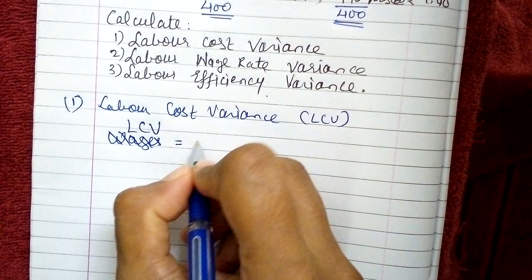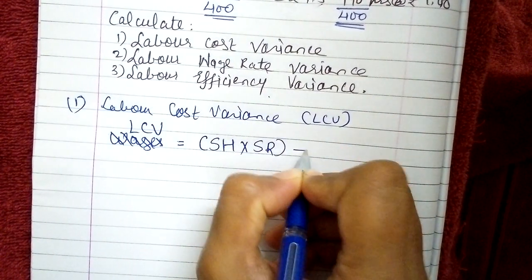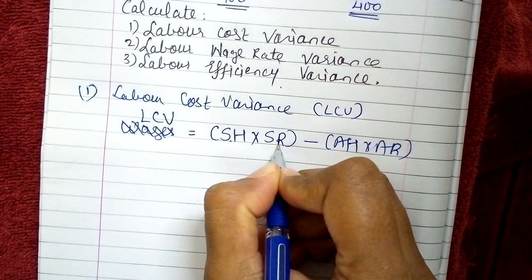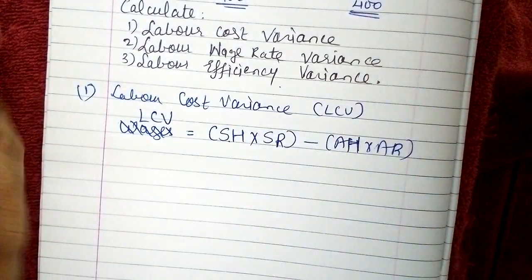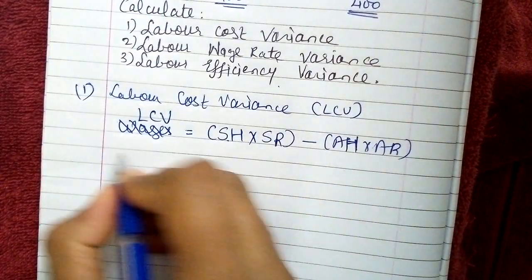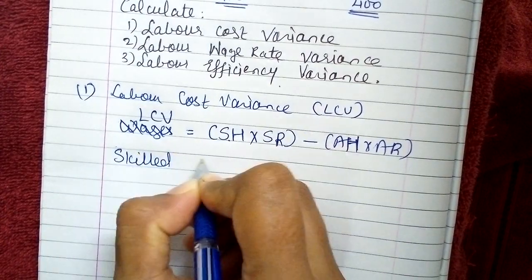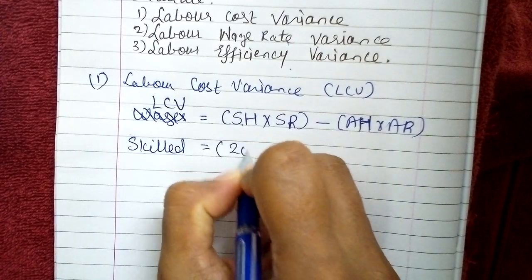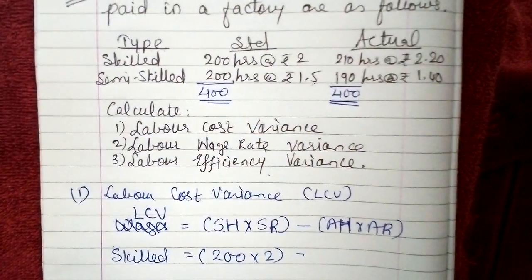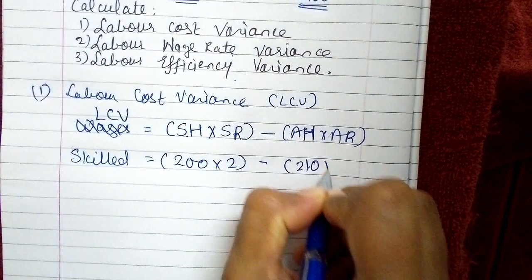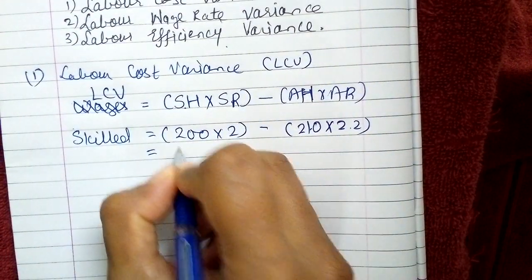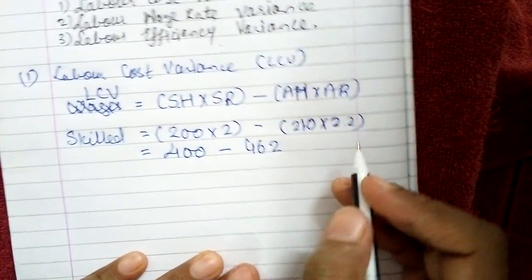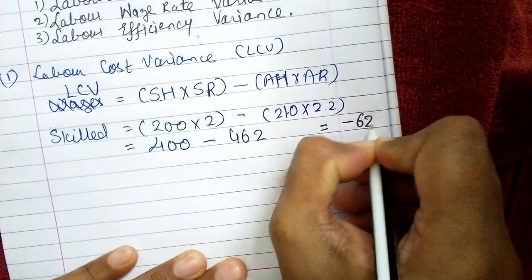LCV equals standard hours into standard rate minus actual hours into actual rate. In place of SQ we write SH, in place of SP we write SR, in place of AQ we write AH, and in place of AP we write AR. For skilled laborers: standard hours are 200 and rate is 2, so 200 × 2. Actual: 210 × 2.2. So 400 minus 462 gives negative 62.